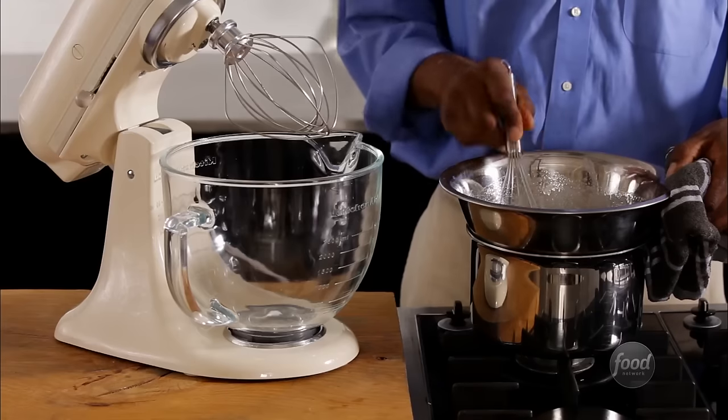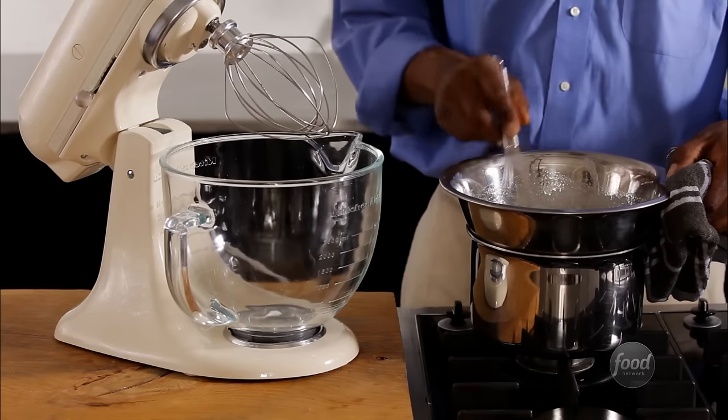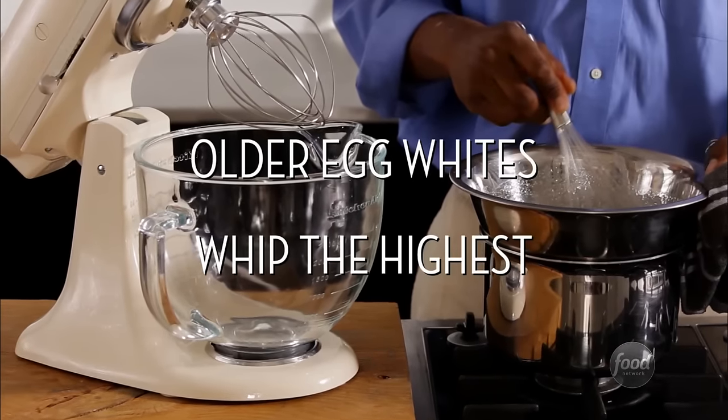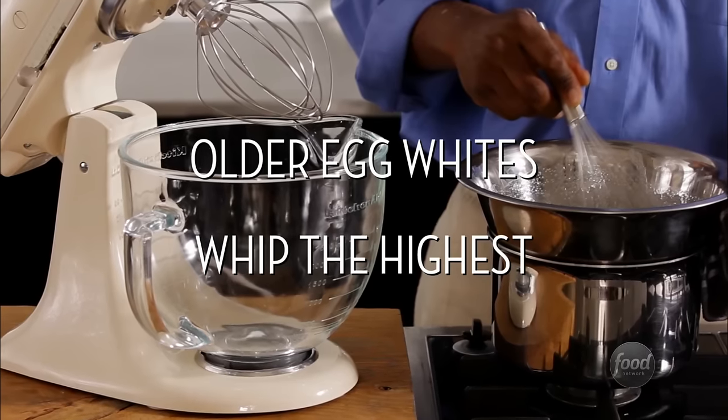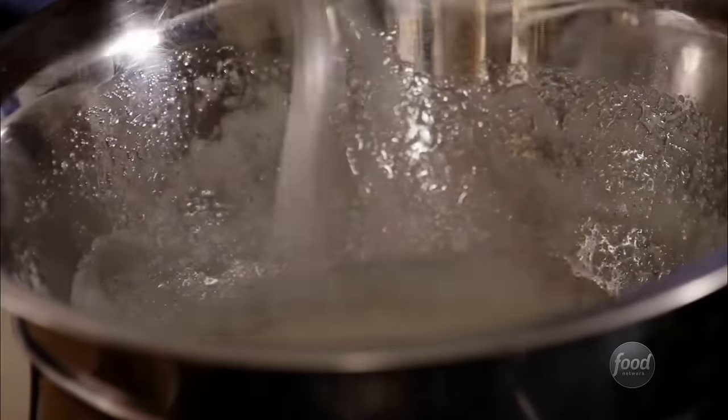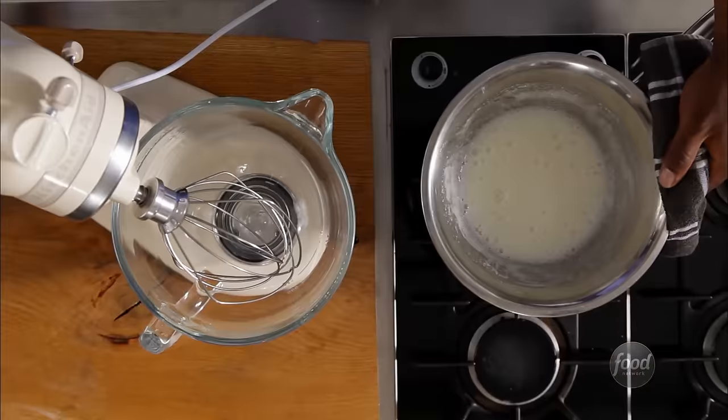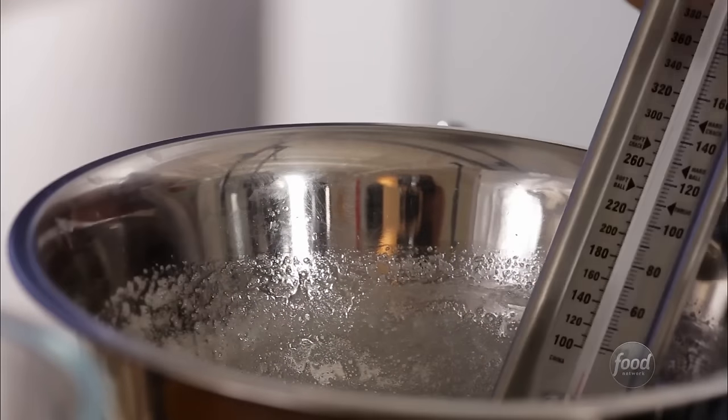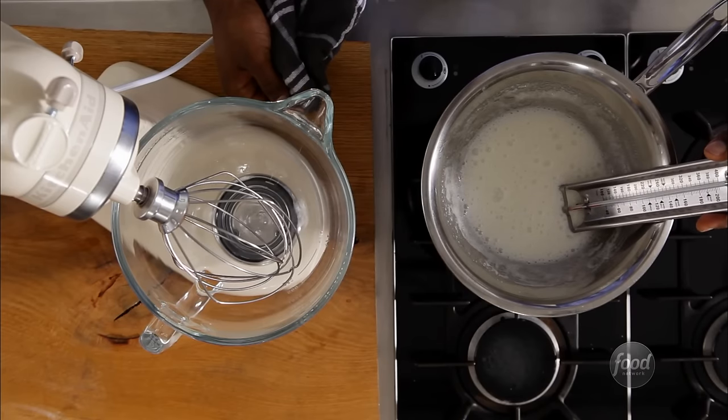Combine egg whites and granulated sugar over a double boiler. Keep whisking or you'll have scrambled eggs instead. Whisk until the sugar melts and you hit 130 degrees Fahrenheit on a thermometer.